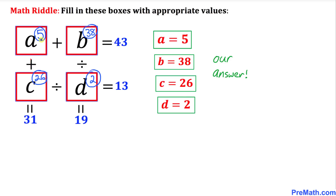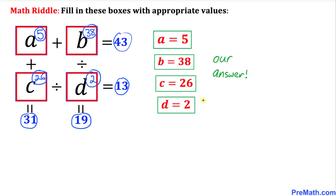We can verify: 5 plus 38 gives us 43; 5 plus 26 gives us 31; 38 divided by 2 gives us 19; and 26 divided by 2 gives us 13. That is our final answer. Thanks for watching, and please don't forget to subscribe to my channel for more exciting videos.